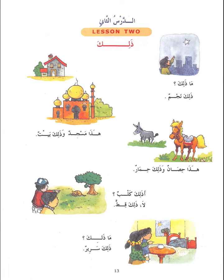So the masjid here is close and the house is far. And so you say: هذا مسجد — this is a mosque. وذلك بيت — and that is a house. The واو means 'and.' It is written close to the word that comes after it, not the word before it. We call this the واو of conjunction, conjoining one sentence with another.